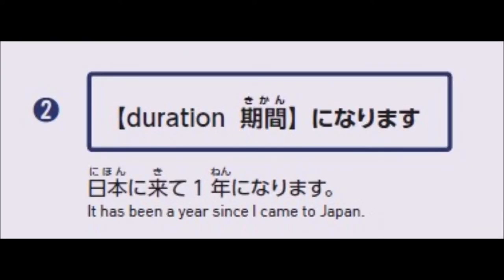Next: duration — Kikan. 'Ni narimasu' means 'it will become' or 'magiging.' 'Ichinen ni narimasu' — it will become one year since I came to Japan. Length of time: ichinen, ni-nen, san-nen — one, two, three years — or ikkagetsu, one month, isshukan, one week. 'Ikkagetsu ni narimasu' — it will have been one month.